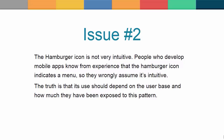Issue number 2: the hamburger icon is not very intuitive. People who develop mobile apps know from experience that the hamburger icon indicates a menu, so they wrongly assume it's intuitive. The dictionary defines a convention as a way in which something is usually done, especially within a particular area or activity. Therefore, we can say that the hamburger icon is a convention, but this does not mean it works in every case. Recently, it has become a staple of no-UI design, and its effectiveness is higher if used as a list icon rather than as an indicator of a menu. The hamburger icon does not look like a menu icon unless users already know that it's supposed to show the items of a menu. The key point is that it depends on the user base and how exposed they are to its use as a menu button.